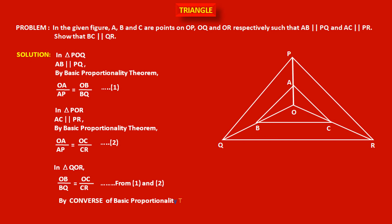By the converse of the Basic Proportionality Theorem — converse means: in a triangle, if one segment divides two sides in the same ratio, then this segment is parallel to the third side of the triangle. Therefore, we can say that BC is parallel to QR.